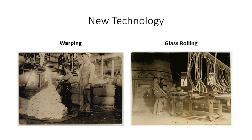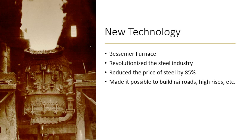There was also huge growth in technology during this period that allowed factories and manufacturing to grow greatly. Technologies eased the amount of labor and time it took to make things. You see this with technologies used in textile manufacturing and glass rolling, a form of glass production that made it far easier to produce glass. The Bessemer Furnace revolutionized the steel industry — it made it much easier to melt iron ore into steel, reducing the price of steel by about 85%, making it possible to build railroads, high-rises, and other steel-dependent structures.